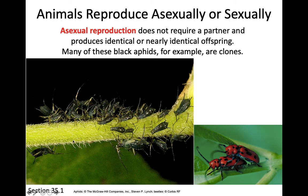Asexual reproduction is a very quick reproductive strategy — you get a lot of numbers very quickly and you don't have to worry about having a partner. But there are downsides. All of these organisms are genetically the same, so if a disease impacts one, it's going to impact almost all of them. If a drought occurs or a particular nutrient is removed, they'll probably all starve to death because they're all genetically identical.